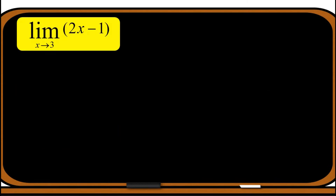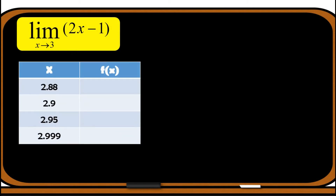Let's begin with example number one. Consider the limit of 2x minus 1 as x approaches 3. We will first consider approaching 3 from its left, or through values less than 3. Always remember that the values to be chosen should be values that are very close to 3. Let's have this table of values. As you can see here, we have the values of x: 2.88, 2.9, 2.95, and 2.999. These are the values that I have chosen that are very close to 3.